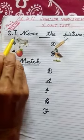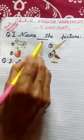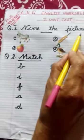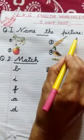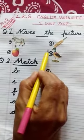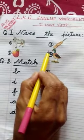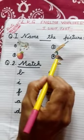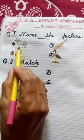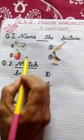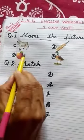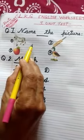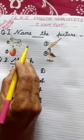Then question number 1: Name the picture. You have been given some pictures. You have to write the correct name of the picture in the answer sheet.